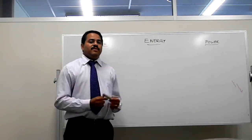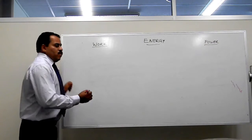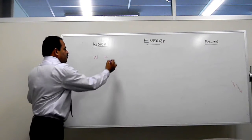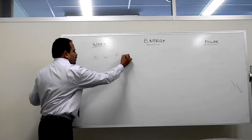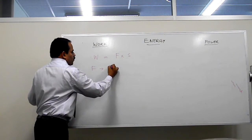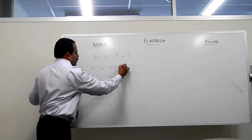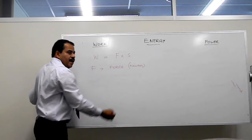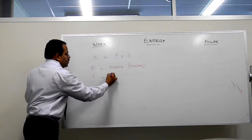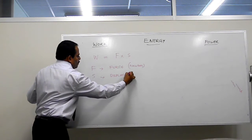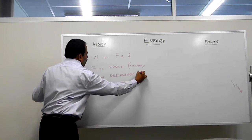Mathematically, we can say work is the product of F and S, where F is force in Newton and S is displacement in meter.